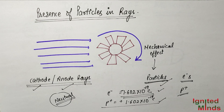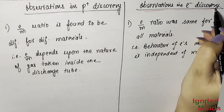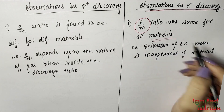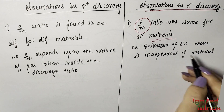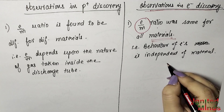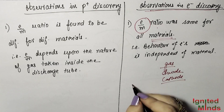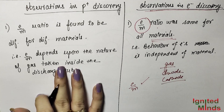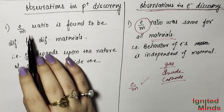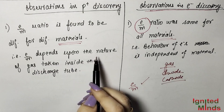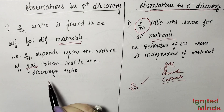However, when studying the discovery of protons, scientists noticed that unlike electrons — whose charge-to-mass ratio was the same for all materials — the charge-to-mass ratio for protons was different for different gases used in the discharge tube. The e/m ratio of protons depends on the nature of the gas.